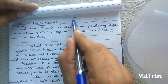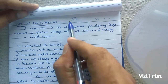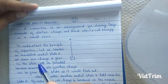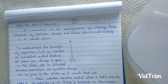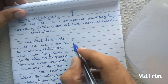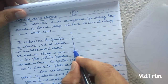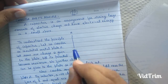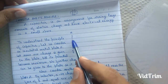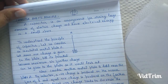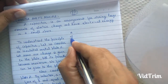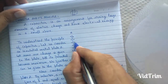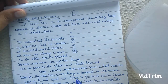These two conductors are generally charged by connecting them to the two terminals of a battery. Now to understand the principle of capacitor, let us consider an insulated metal plate A, placed on some insulated surface. Let some positive charge be given to this plate till its potential becomes maximum.